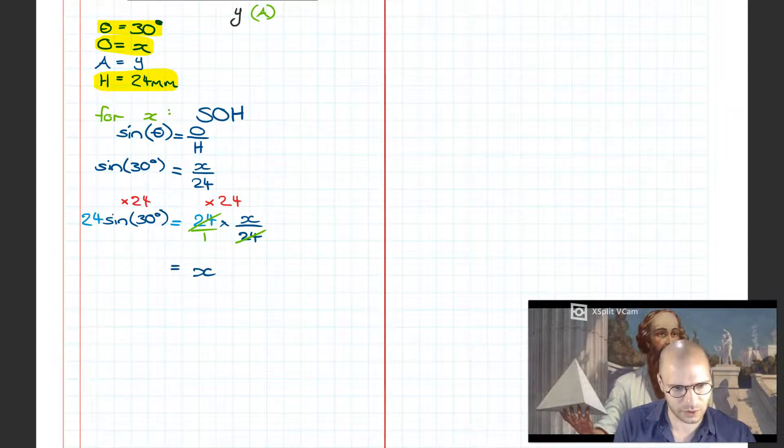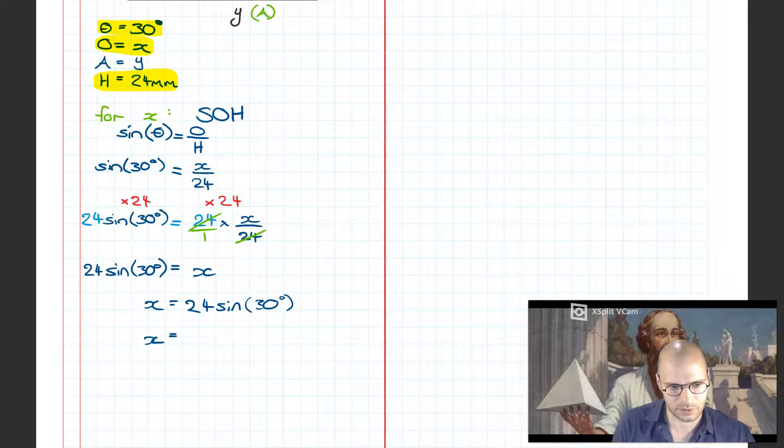What we understand from fractional multiplication is this is a 24 over 1 and that's going to cancel, so we effectively just have X on the right. 24 sine 30 degrees on the left. Rearranging this, I can simply move the expression on the right to the left and vice versa. So it's X equals 24 sine 30 degrees.